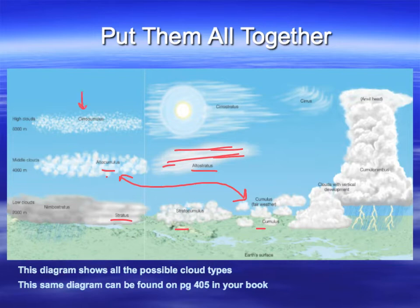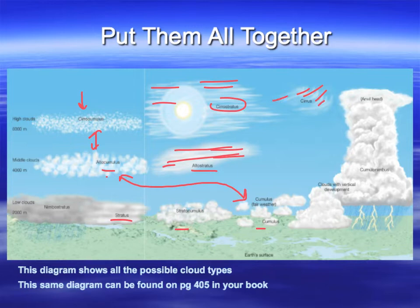Then up to the higher level clouds: cirrocumulus — even smaller little puffs, more spread out. Cirrostratus — even thinner flat layers. And then lastly, high level cirrus clouds.